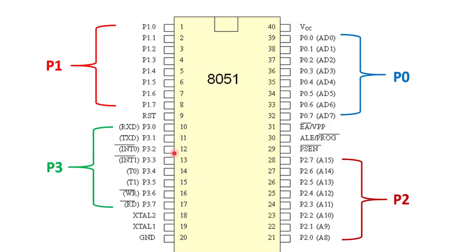Pins 12 and 13 of port 3 are used for INT0 and INT1 — external interrupt 0 and interrupt 1. These are active-low pins indicated by a bar over the pin name. When a low pulse is given on these pins, an interrupt is generated. An interrupt is an external event that causes the 8051 to hold its current main program execution, serve the external event, and then return to the main program. This is handled with the help of an ISR — interrupt service routine.